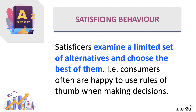Satisficing is a move away from maximising behaviour — making satisfactory, sufficient choices. Satisficers tend to examine a limited set of alternatives. We don't think about every holiday destination, every type of coffee machine, or every possible choice. We examine a limited set of alternatives and then choose the best of them given the information we have and our experience.